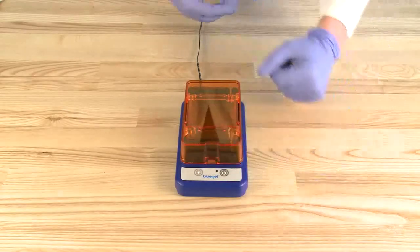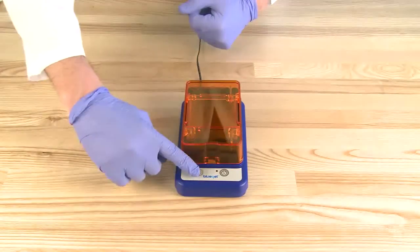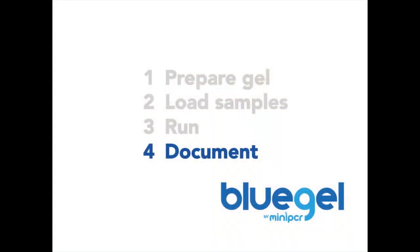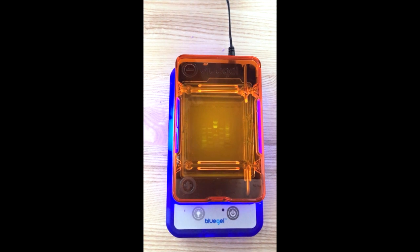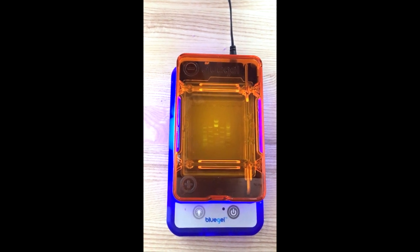After the gel has run for a few minutes, you can take a look at your DNA by turning on the light. Document the run by taking a picture through the orange cover with a phone, tablet or other capture devices.